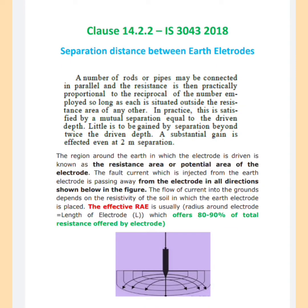Hello friends. I usually get calls from many engineers and contractors about the separation distance between two electrodes, or the number of electrodes. Usually they install to achieve 1 ohm prescribed limit of resistance, and many engineers are confused about that. I want to answer that question with the help of prevalent IS 3040:2018, Clause 14.2.2.